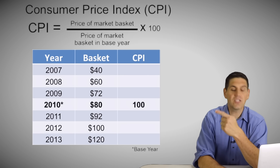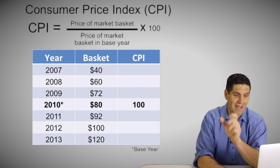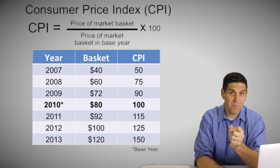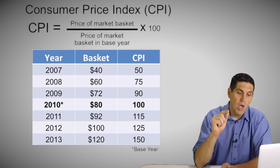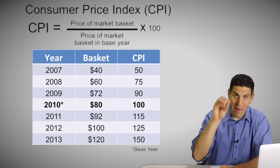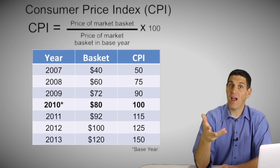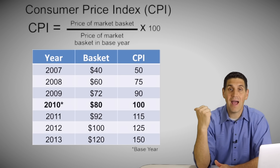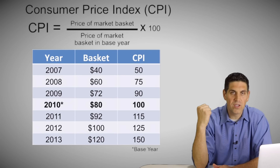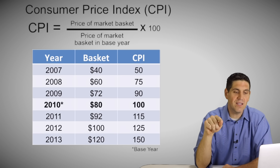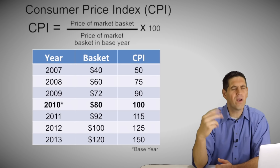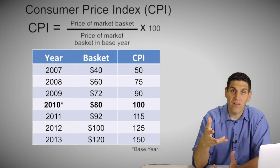For 2011, the value of the market basket is $92. 92 divided by 80 times 100 pops out 115 — prices increased 15% since the base year. For 2012, it went from 80 to 100 — an increase of 25% — so the CPI is 125, or the equation gives 100 divided by 80 times 100 = 125. For 2013, prices went from $80 in the base year up to $120 — they went up $40, which is 50% of 80 — so the CPI must be 150.